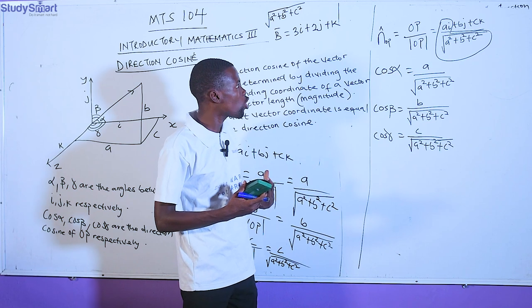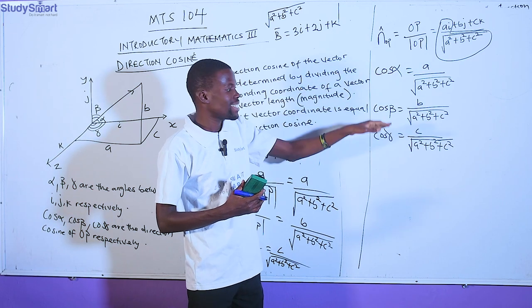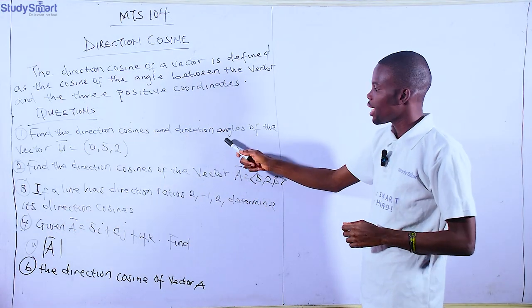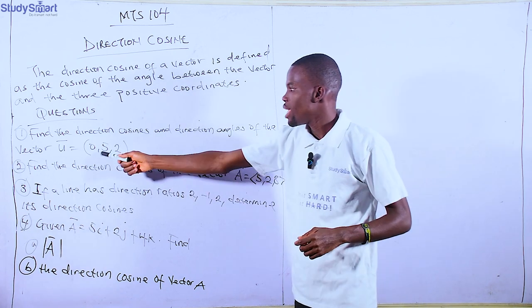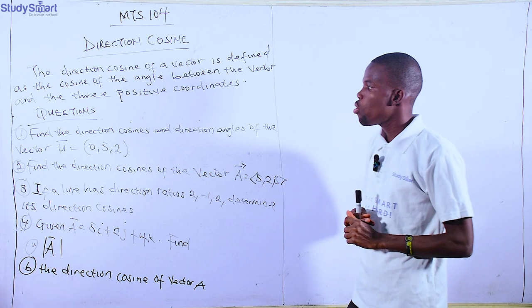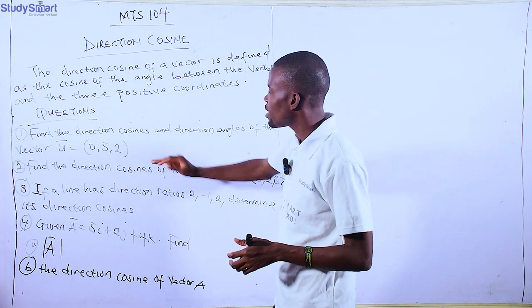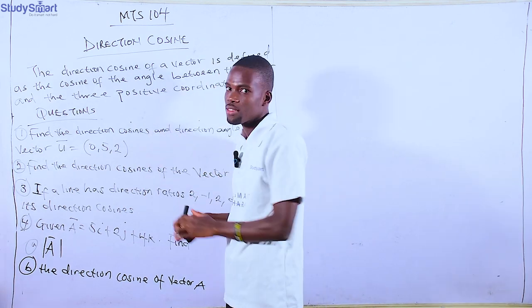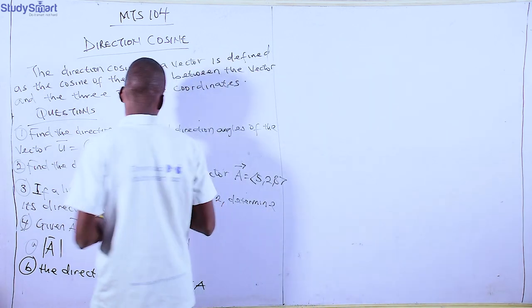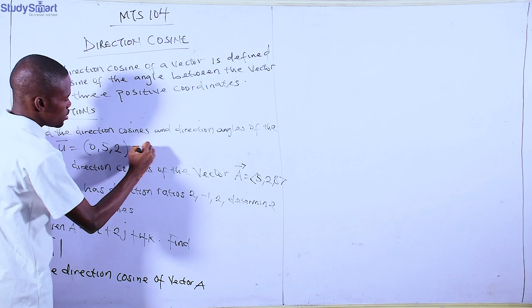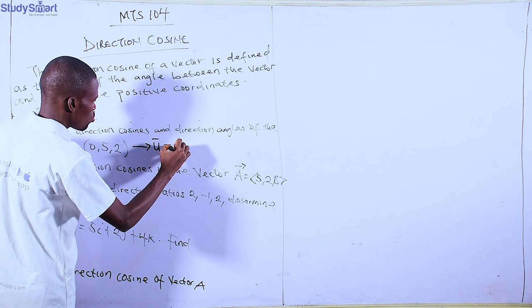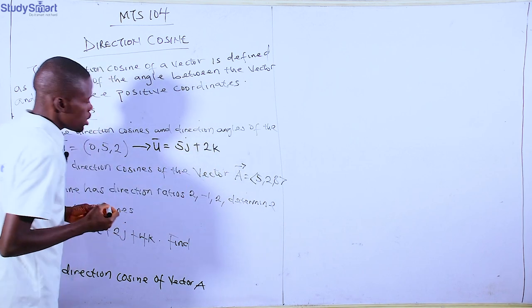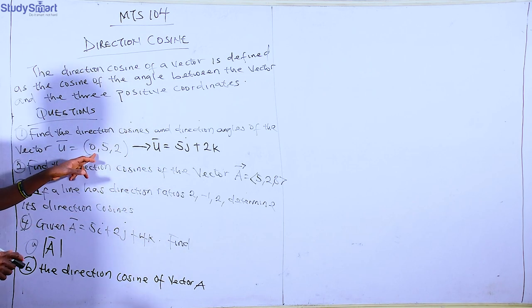Sometimes you'll be asked to find the direction cosine for x, y, and z axes, so I prefer you use the unit vector method. Find the direction cosine and the direction angle of the vector (0, 5, 2). Since this is a vector representation, you can write it fully or use parenthesis notation. So (0, 5, 2) is the same as 0i + 5j + 2k. Since the i-component is zero, we cannot include it.